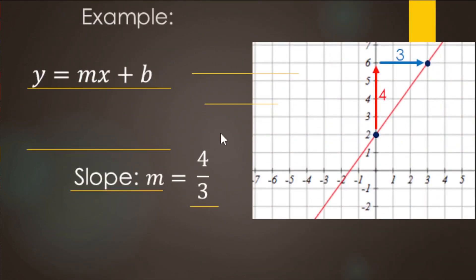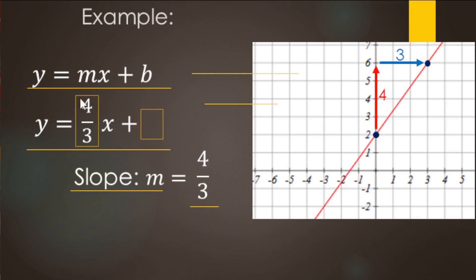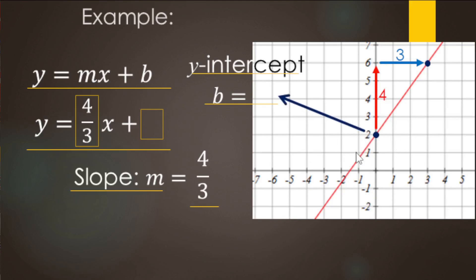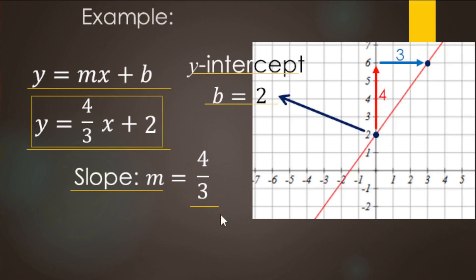Now that we know the slope is four-thirds, we're ready to fill in our slope-intercept form. The slope replaces the m, so that's going to be four-thirds. And then b gets replaced with the y-intercept — look on the y-axis, the y-intercept is right there at two. So b equals two, and there's our answer: the equation of this line is y equals four-thirds x plus two.